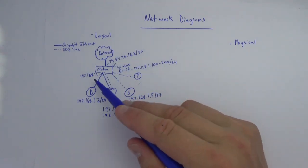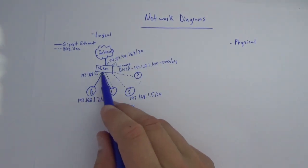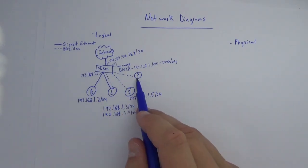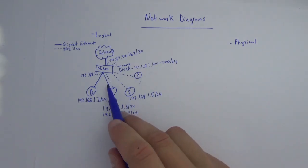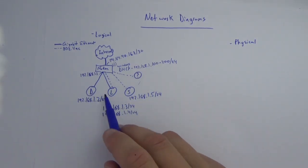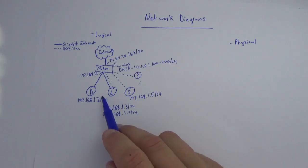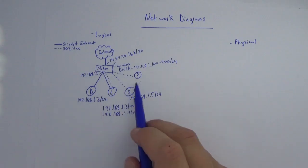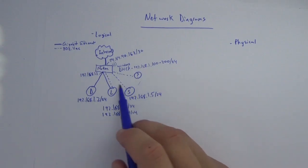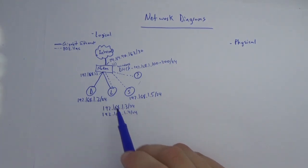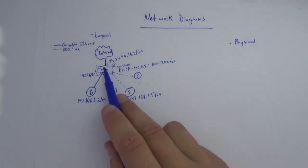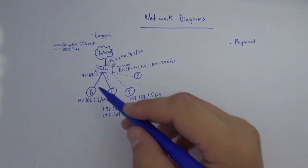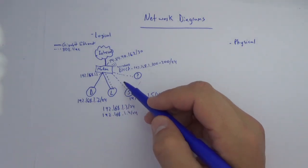Usually network devices are shown inside rectangles, and endpoints or nodes — the things actually connecting to the network — are shown as circles. If you use a product like Microsoft Visio, it has pictograms and icons for each device type that are more descriptive than rectangles and circles. Using proper lines for bandwidth and clear shape conventions helps differentiate network devices from endpoint devices.